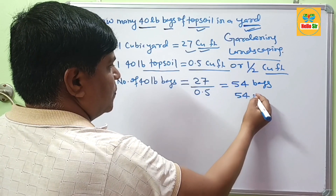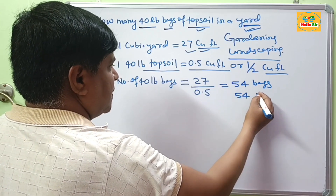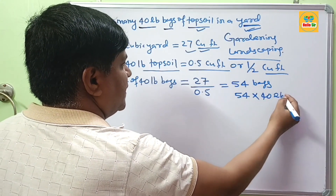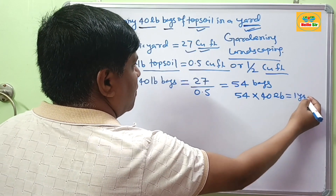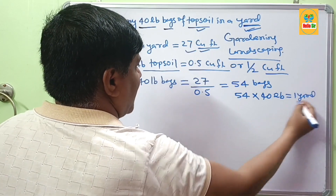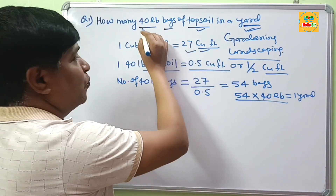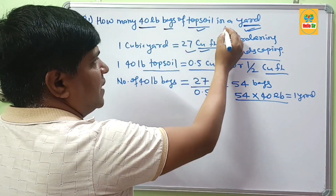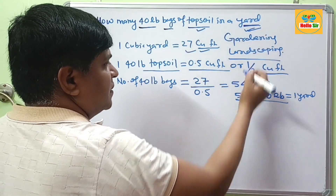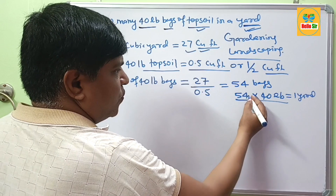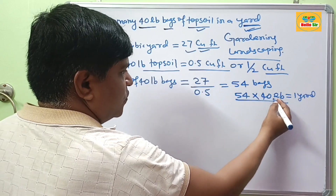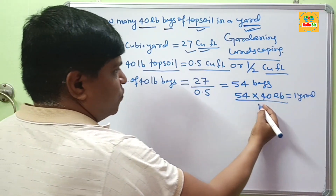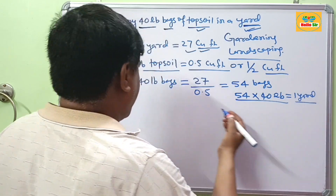So 54 bags of 40 lb topsoil equal 1 yard of topsoil. That means 54 bags of 40 lb topsoil are required to make 1 cubic yard.